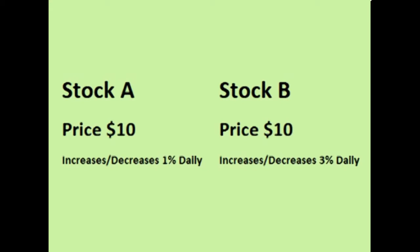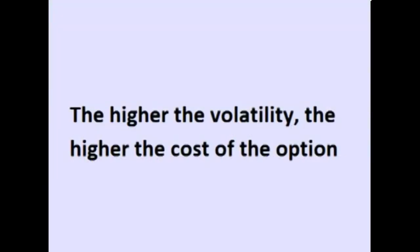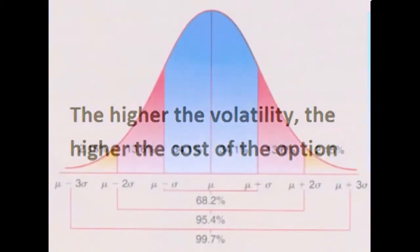Therefore, the option for the stock that moves 3% a day will be priced much higher than the option for the stock that only moves 1% a day. In other words, the higher the volatility, the more the cost of the option.